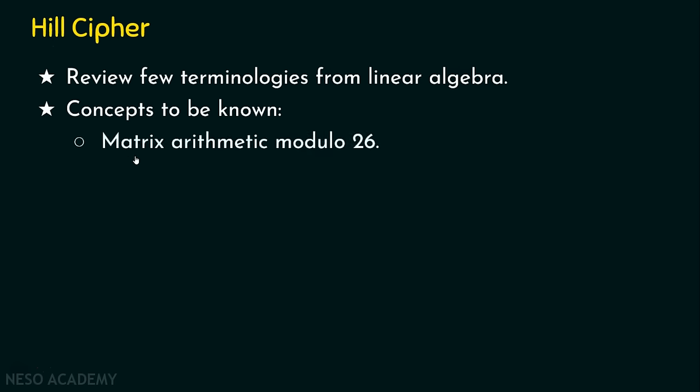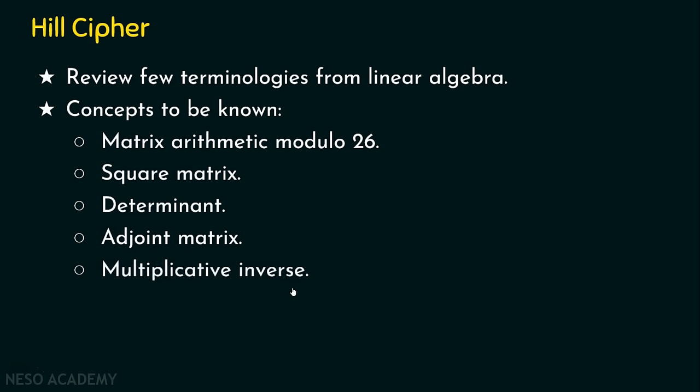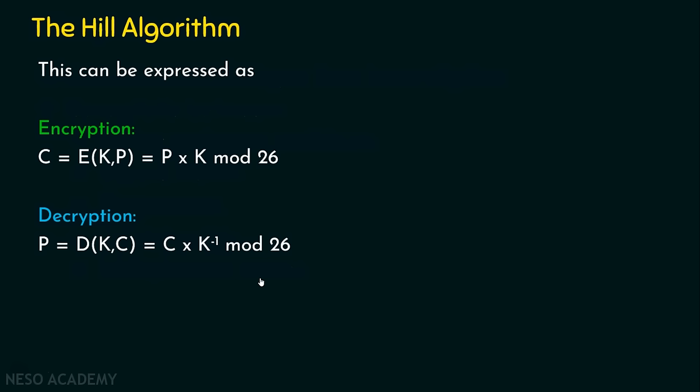A few mathematical concepts should be known before progressing into Hill Cipher encryption and decryption. These include matrix arithmetic modulo 26, the square matrix, the determinant, the adjoint matrix, and the multiplicative inverse. While solving the problem, I will help you understand these concepts in a simplified manner. Before stepping into decryption, we will review the Hill Cipher encryption and decryption process.